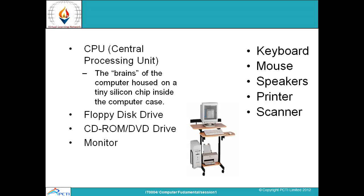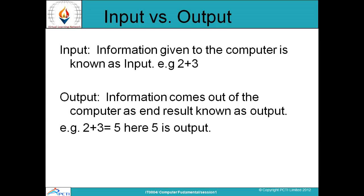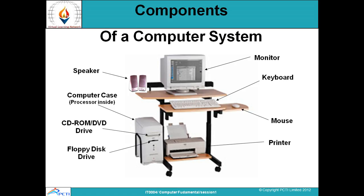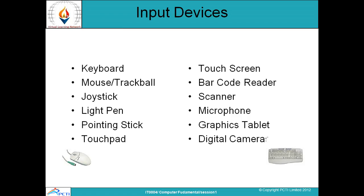The difference between input and output: input is the information you provide to a computer — any data given to the computer is called input. The computer does the processing and returns information as output. The different types of input devices include keyboard, mouse, trackball, joystick, light pen, pointing stick, touchpad, and touch screen — these are all input devices through which we send information to the computer.